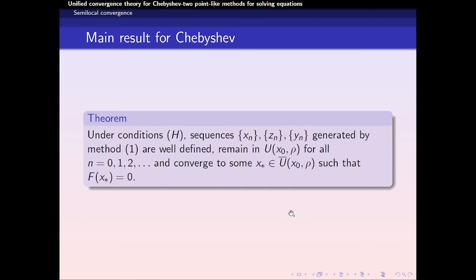Now we have the theorem of semi-local convergence of the general method. Under condition H, sequences xₙ, yₙ, and zₙ generated by this method are well-defined, remain in the open ball with center x₀ and radius ρ, and converge to some x* belongs to the closed ball with center in x₀ and radius ρ, such that F(x*) = 0.